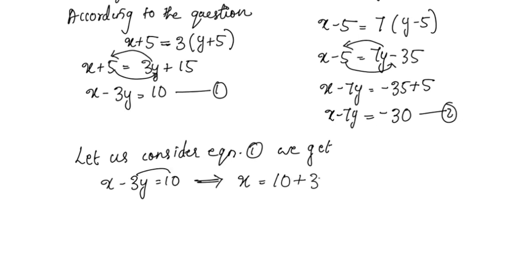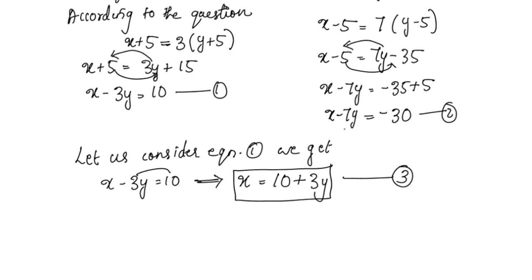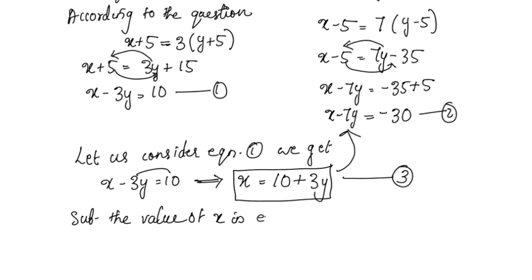From equation 1, we get x minus 3y equals 10. This is equation 3. Now we will substitute the value of x into equation 2.